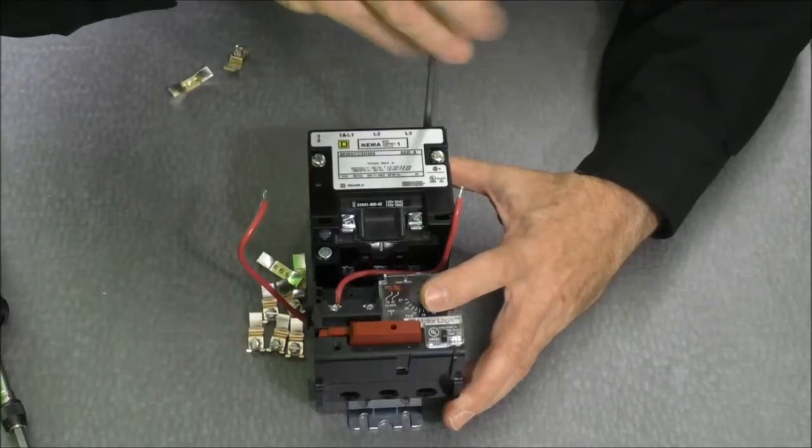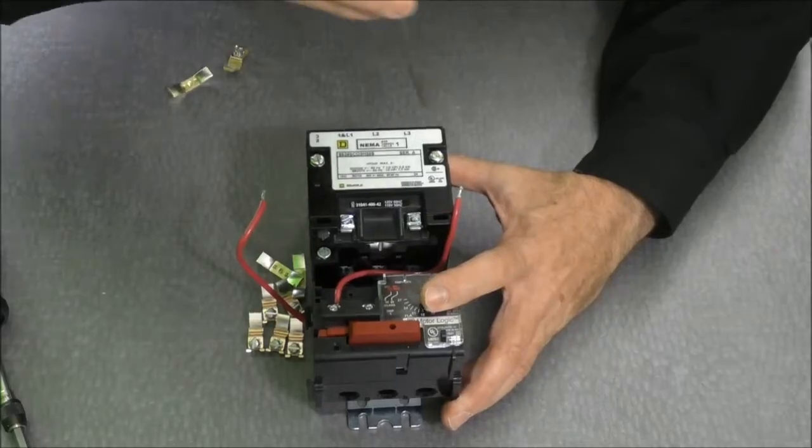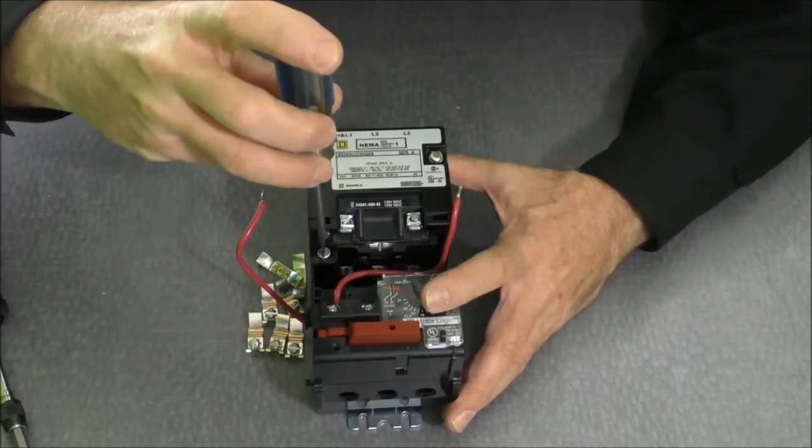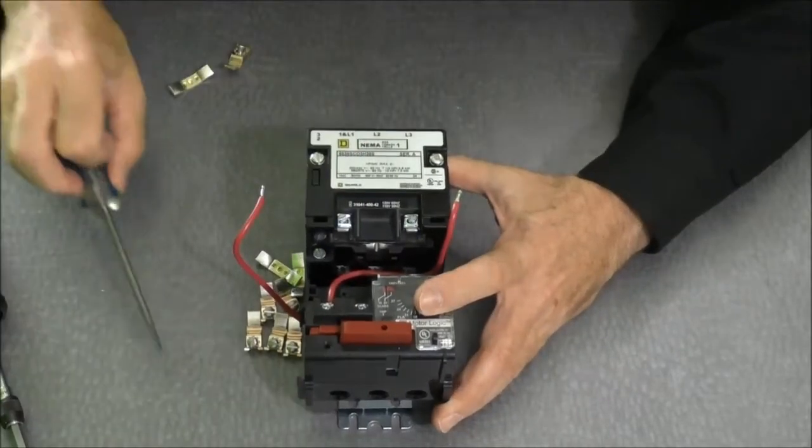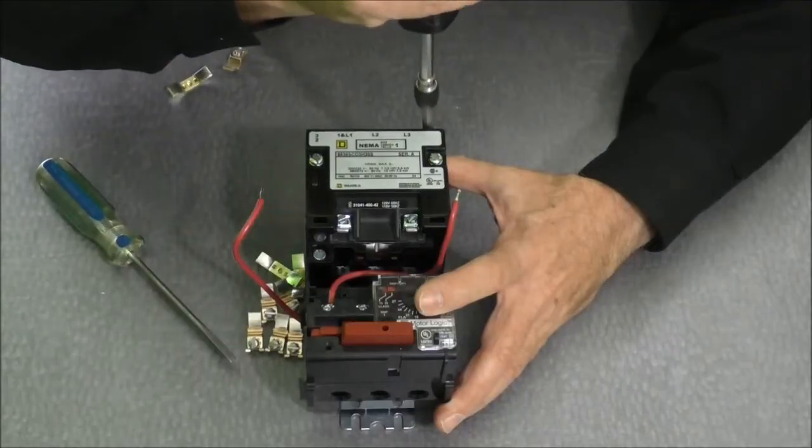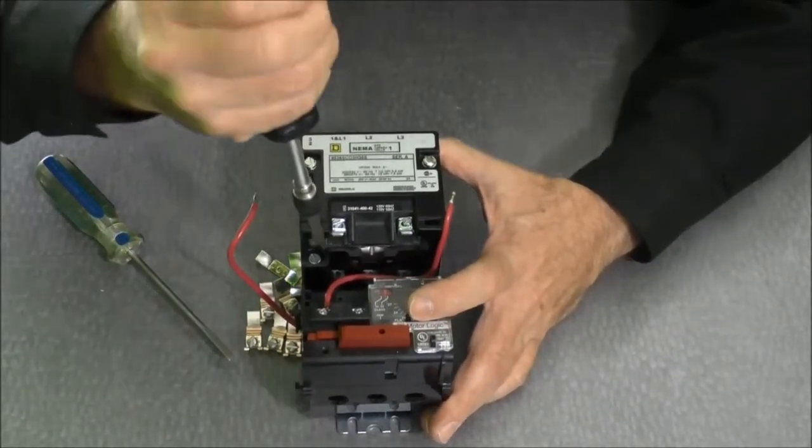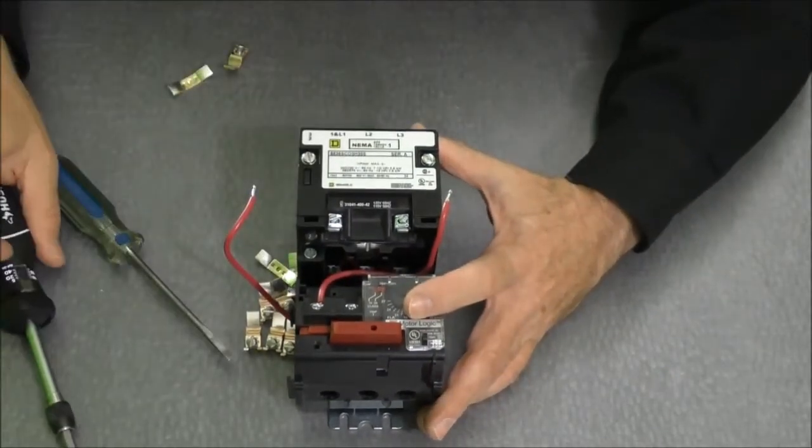I'm going to tighten the screws. These screws have an 18 to 21 inch pound rating. So I'm going to use my torque driver to torque that down. Once the torque driver begins to ratchet we know that we're tight. And we're good to go.